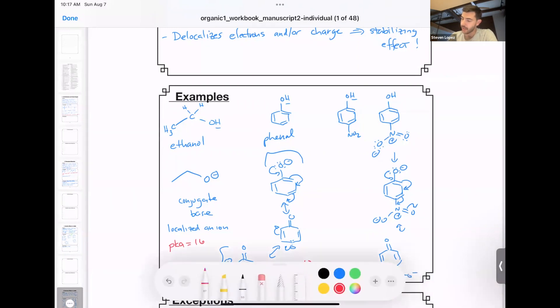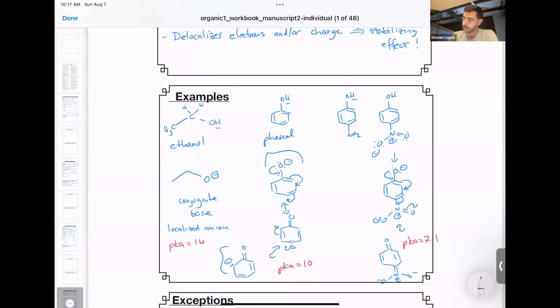If you thought that the pKa would be lowered in the case of nitrophenol, you'd be right. The pKa of this molecule is about 7.1. So this is another thousand-fold increase in acidity relative to phenol and a billion-fold increase relative to ethanol.